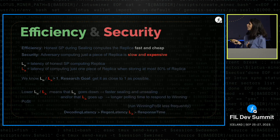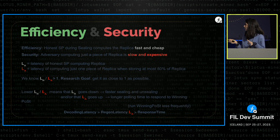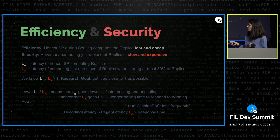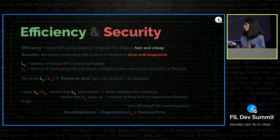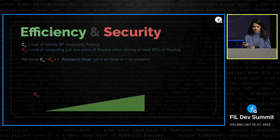We want to either lower honest latency or raise adversary latency, but these are coupled. Remember the seal-stack attack: the adversary's regeneration latency must be larger than both the response time and the decoding latency, so we cannot allow fast unsealing. There are tensions between different parameters, and the key takeaway is to focus on the ratio rather than individual costs.